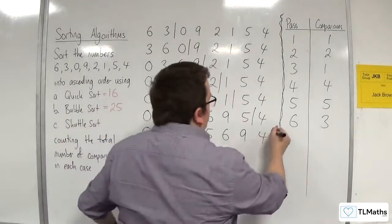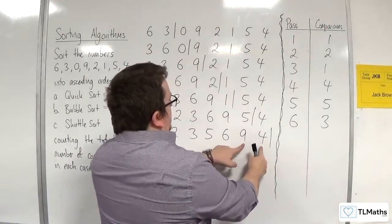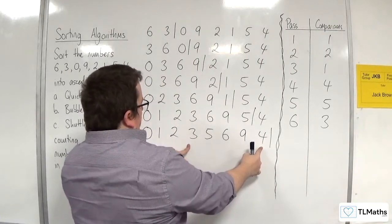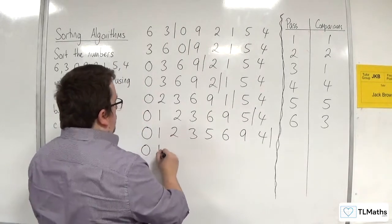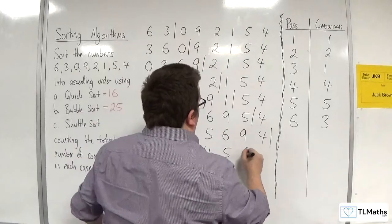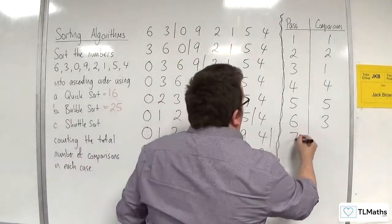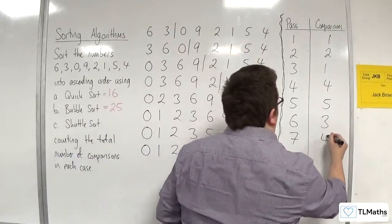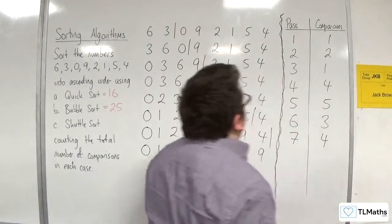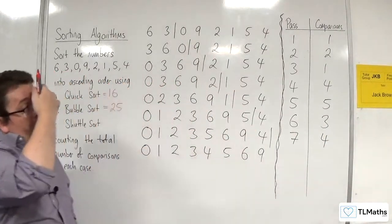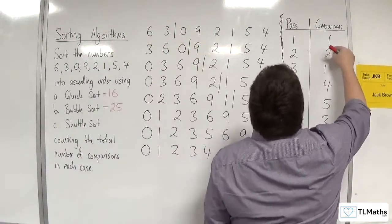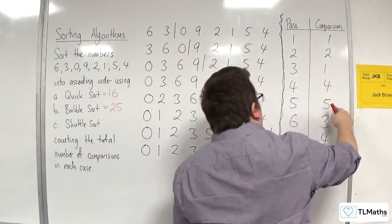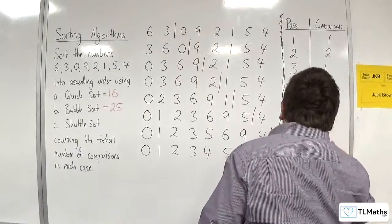Then we bring in 4. 4 gets compared with 9 and they swap, then 6 and they swap, then 5 and they swap, then 3 — no swap. So 0, 1, 2, 3, 4, 5, 6, 9. On the seventh pass, we make 4 comparisons. So the total number of comparisons for the shuttle sort is 1 plus 2 plus 1 plus 4 plus 5 plus 3 plus 4, which equals 20.